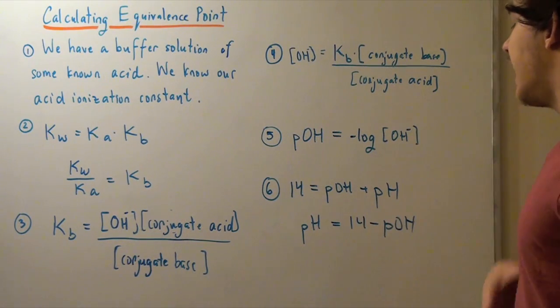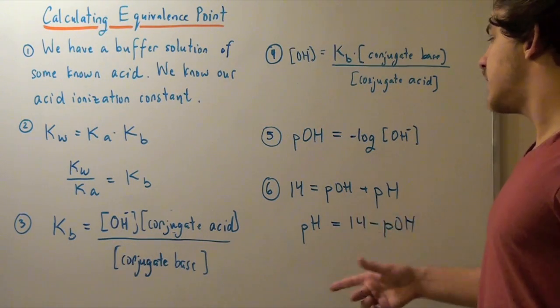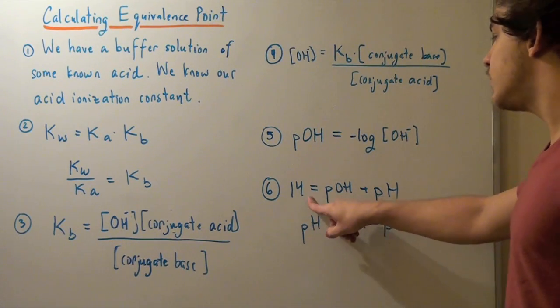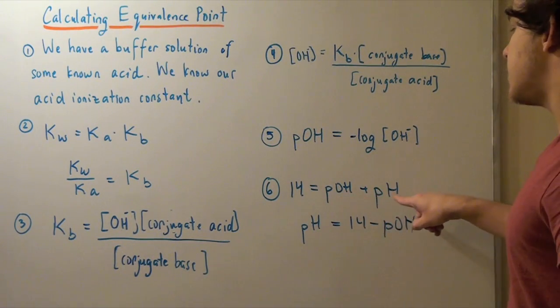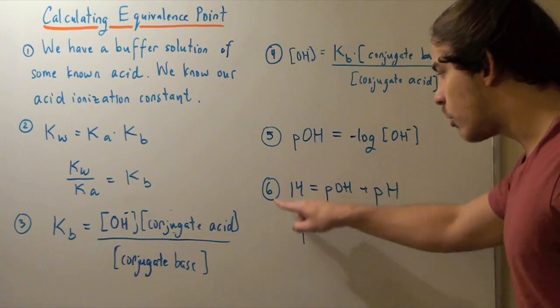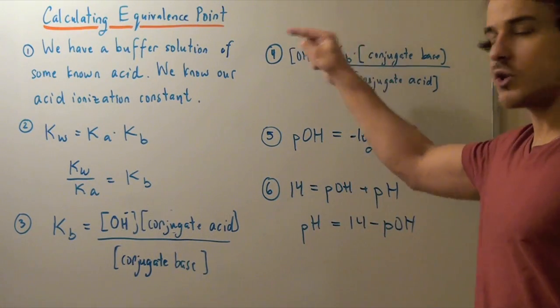And finally, in the final step, I solve for the pH by using the formula, 14 equals POH plus pH. Now, if you don't know where this formula comes from, check out the link right there.